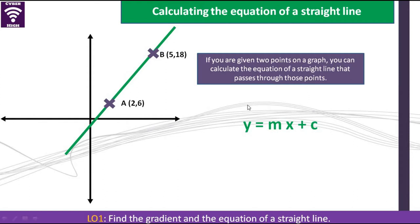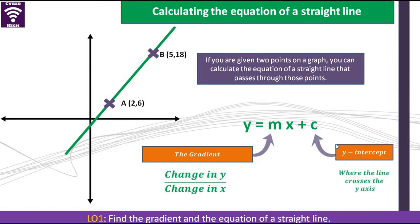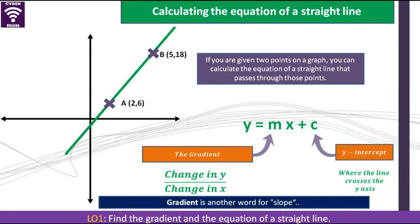What is important is to know that the general equation of a straight line is in the form of y equals mx plus c. In this regard, m represents the gradient of the line. Now, c is the point where the line crosses the y-axis. So gradient is another word for slope.